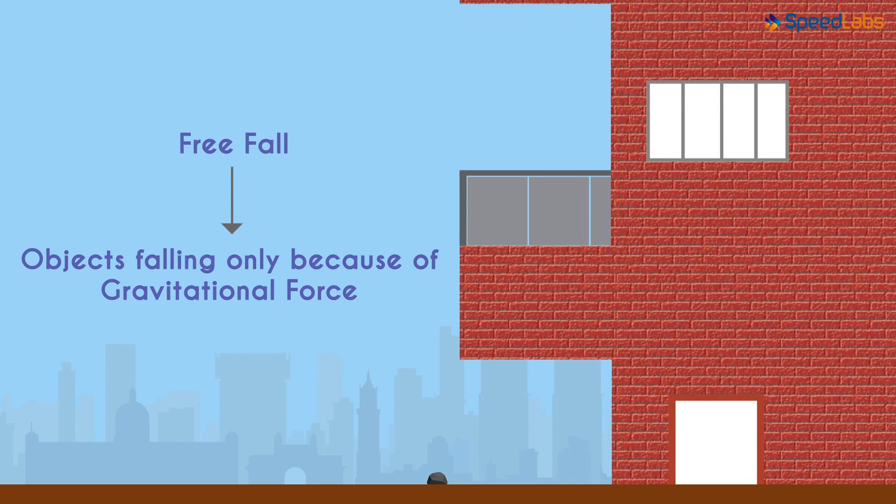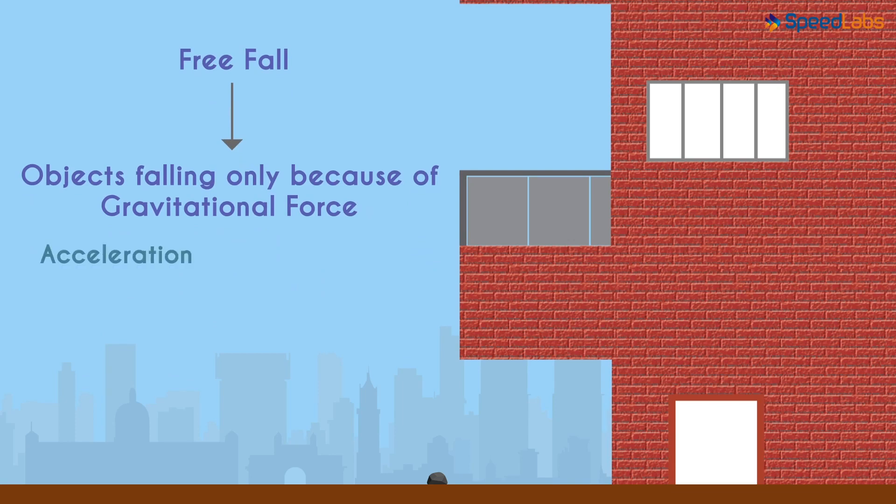This stone accelerates towards the earth, and this acceleration due to the gravitational force of the earth is denoted by lower case g. Using a few mathematical equations, we derive the value of g as this.